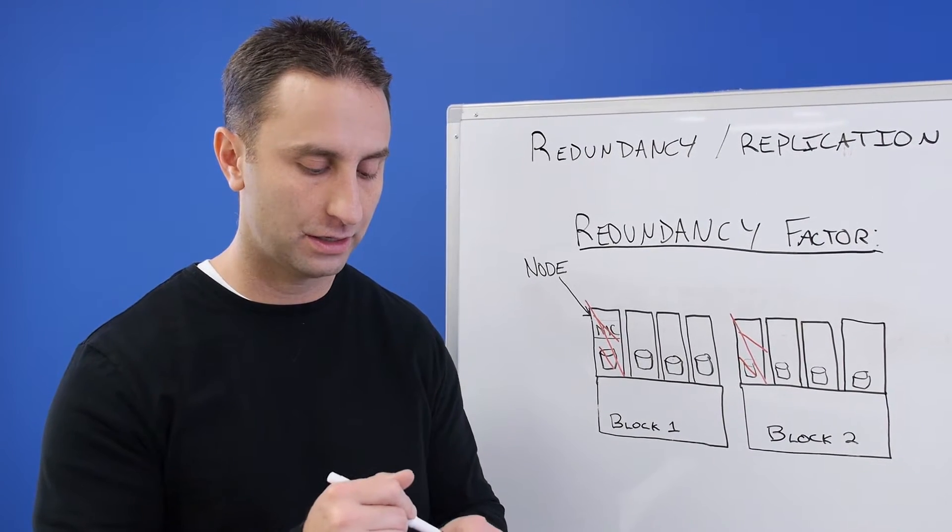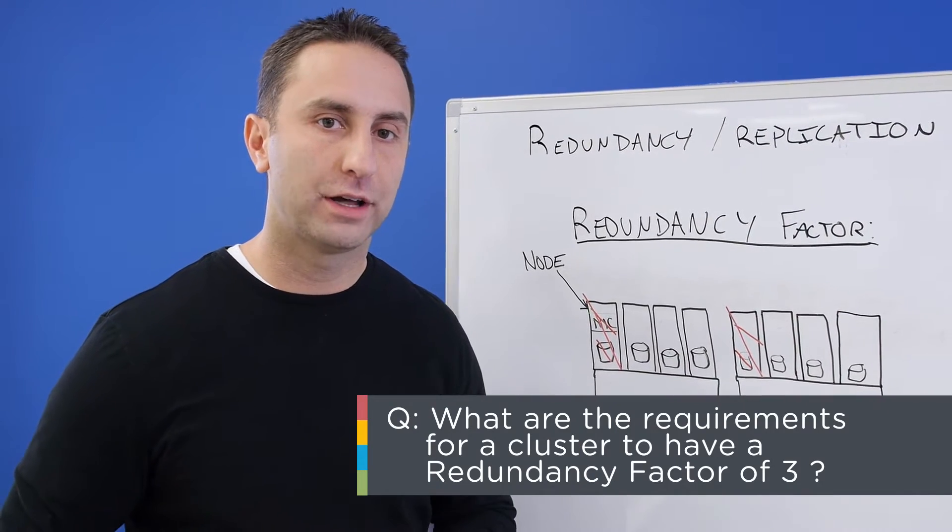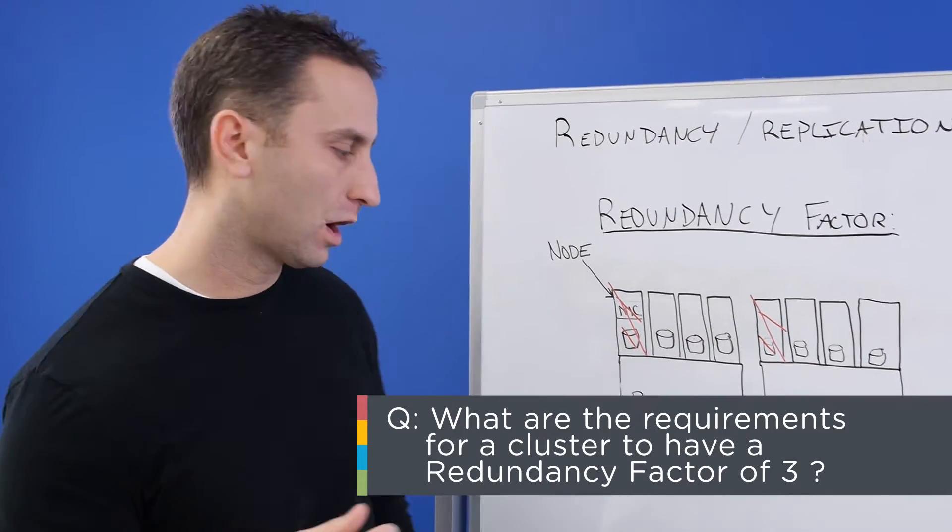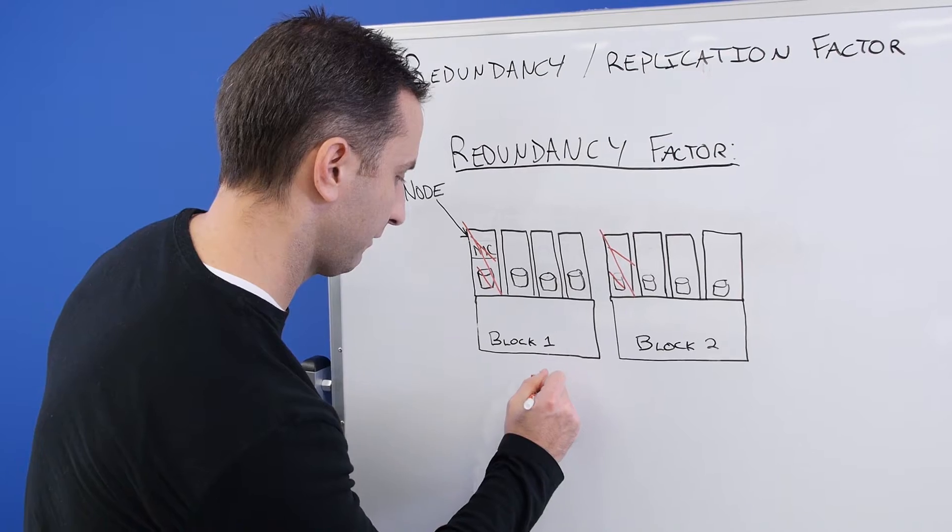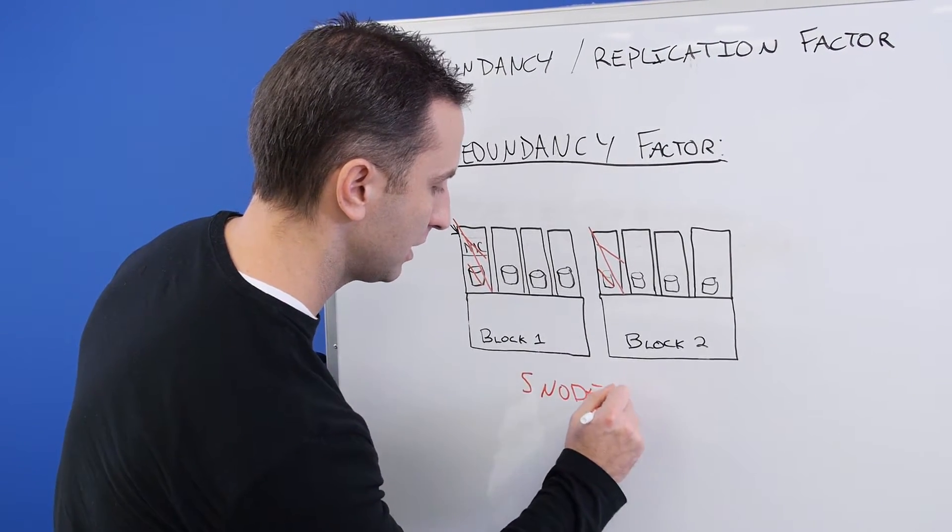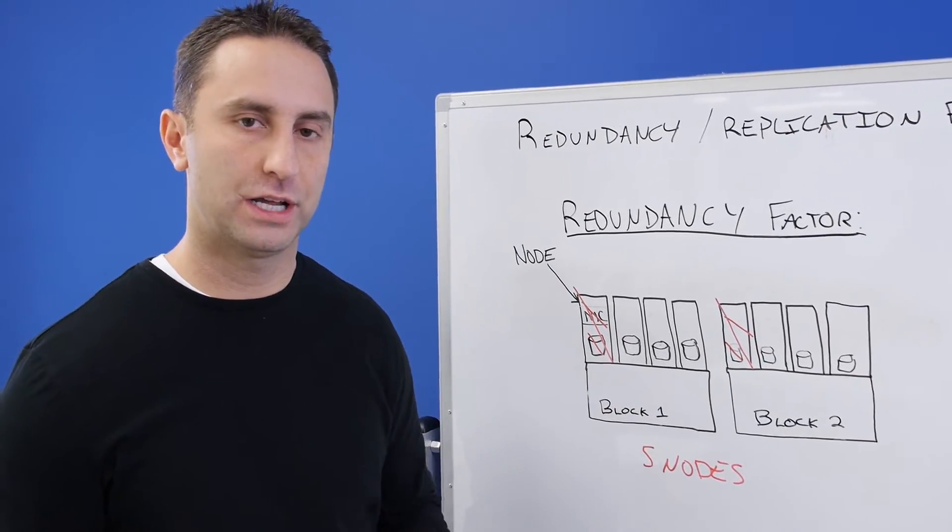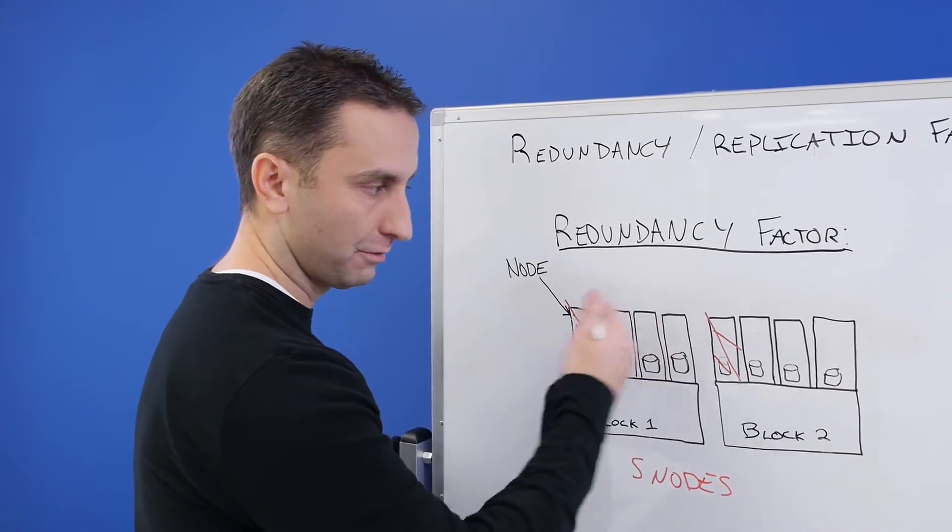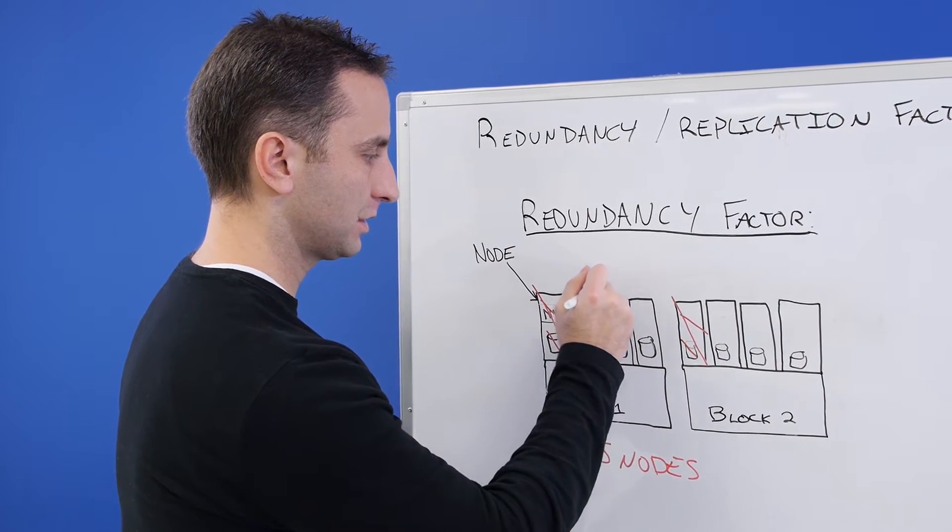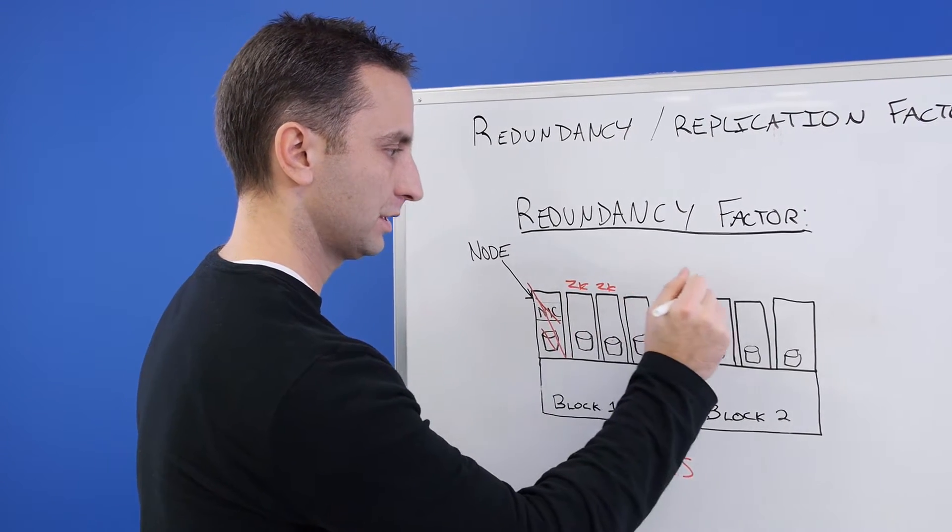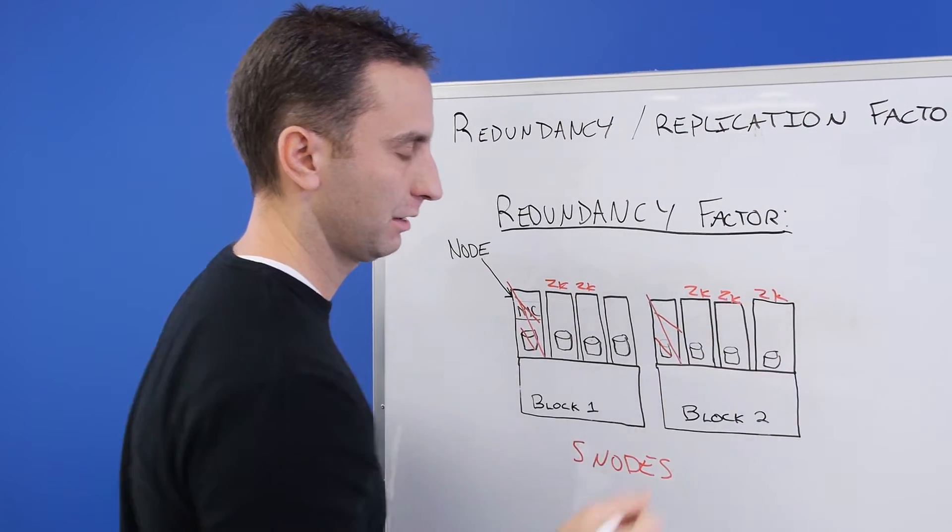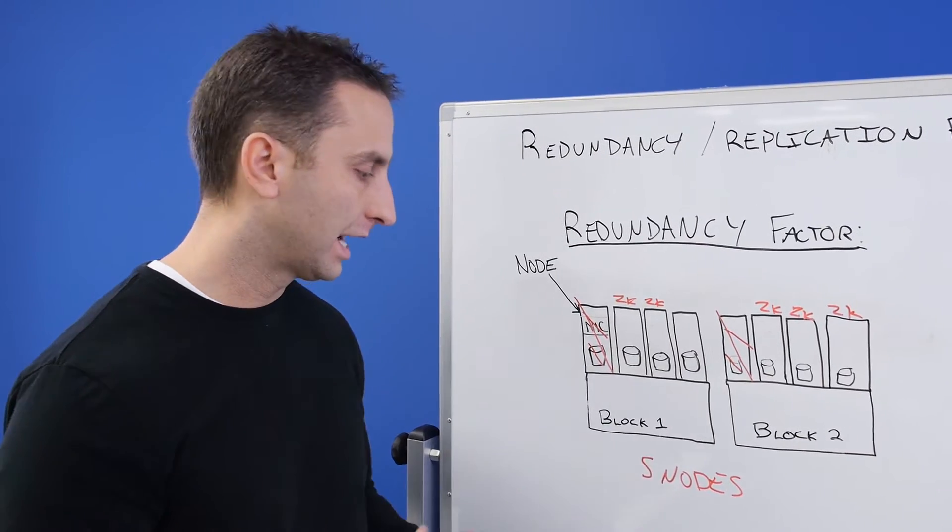Before you can set a redundancy factor of three in your cluster, there are a number of requirements that must be met. The first requirement is you need to have five nodes. The reason we have to have five nodes is because we require five zookeeper hosts in your environment. So in this environment here, assuming these aren't failed, this could be a zookeeper host, this could be a zookeeper host, and these three could all be zookeeper hosts. That would meet the minimum requirement for redundancy factor three.